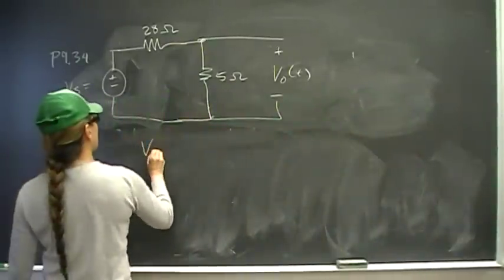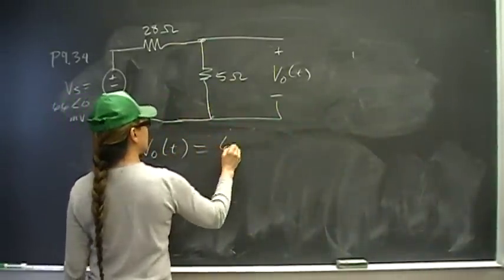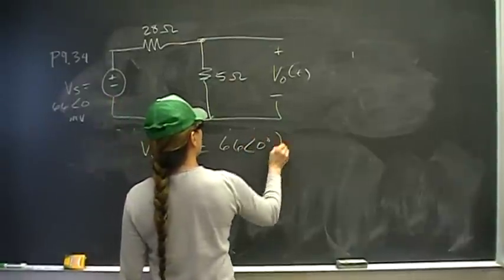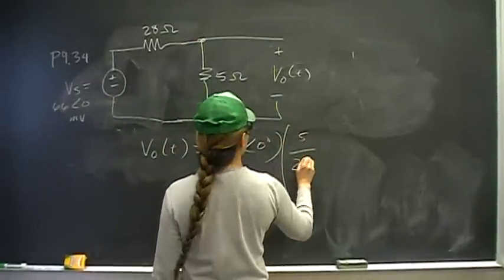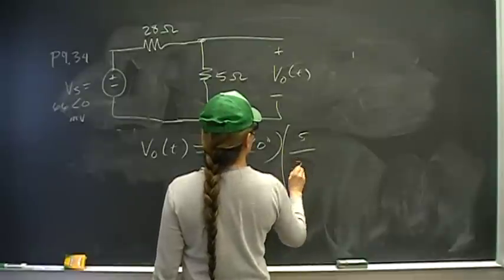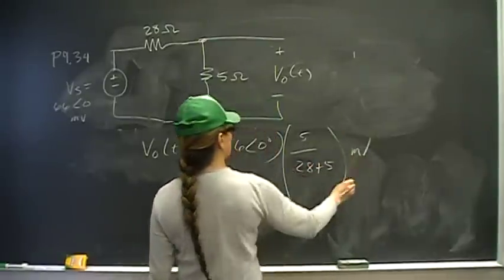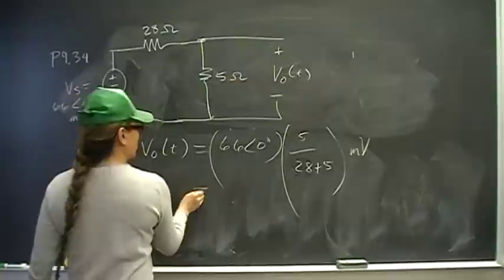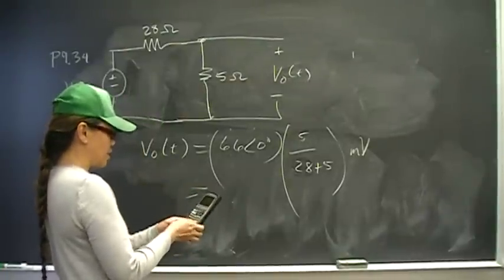So V0 of t is going to be... The total voltage is equal to 66 angle 0 times 5 over 28 plus 5 millivolts. So we take 66 times 5 divided by 33, and magnitude is going to be 10 angle 0 millivolts.